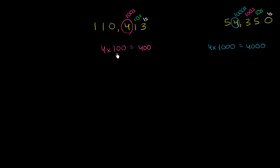So we can now compare the two. The four in 110,413 is one tenth the value of the four in 54,350. And it makes complete sense.